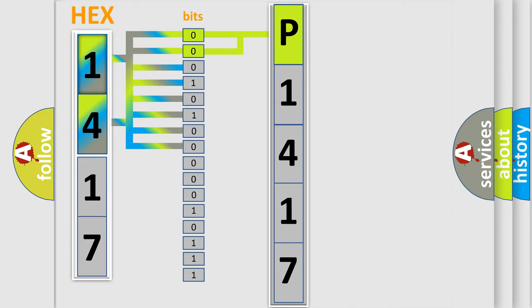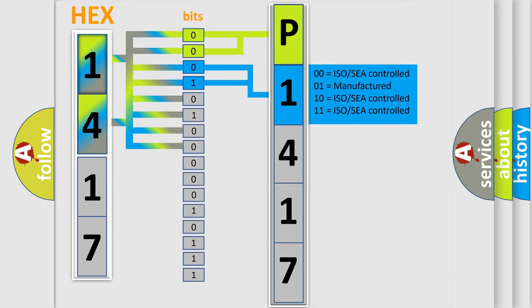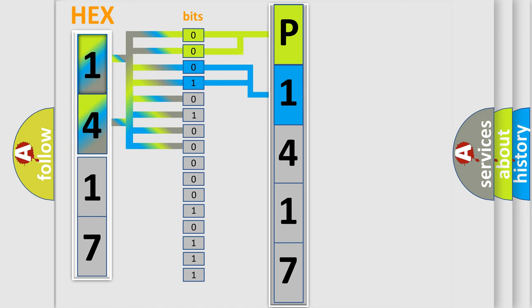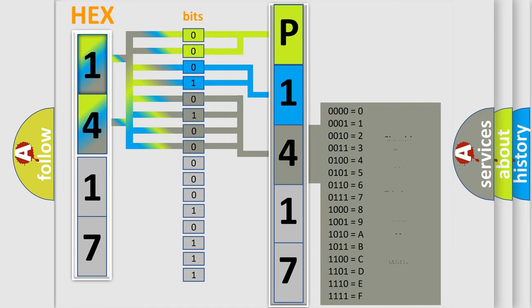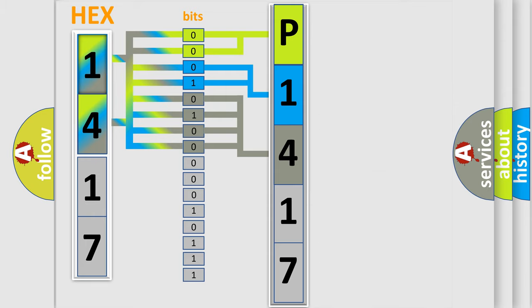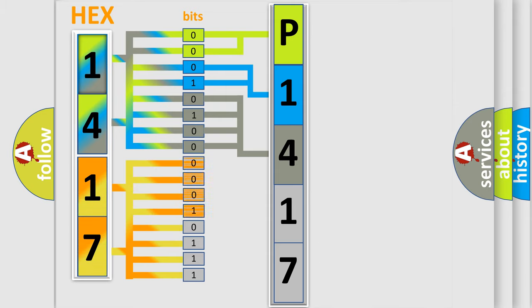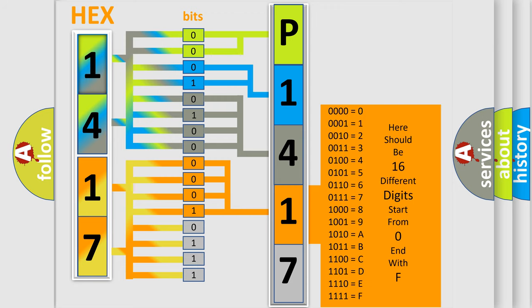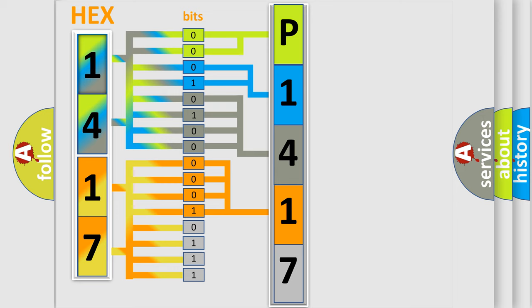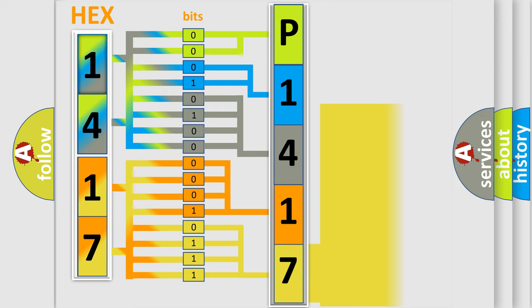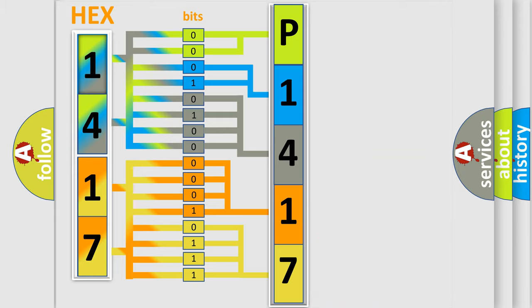The next two bits determine the second character. The last bits of the first byte define the third character of the code. The second byte is composed of a combination of eight bits. The first four bits determine the fourth character, and the combination of the last four bits defines the fifth character. A single byte conceals 256 possible combinations. We now know in what way the diagnostic tool translates the received information into a more comprehensible format.